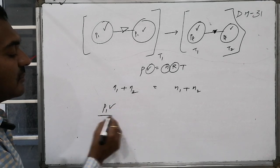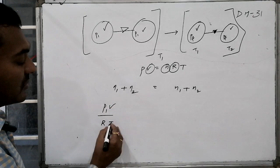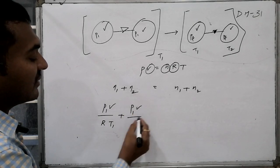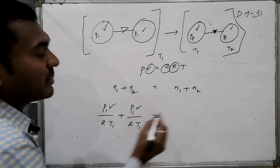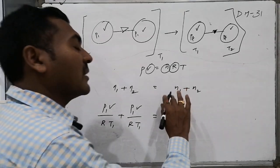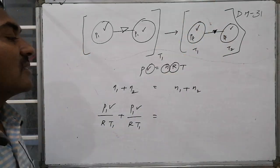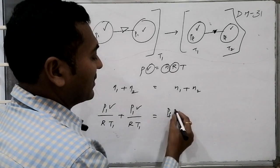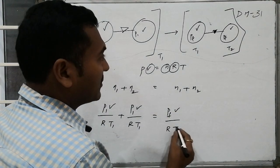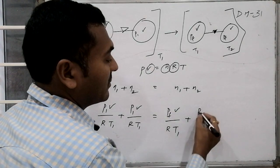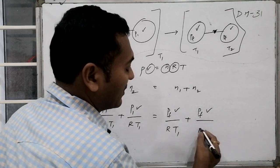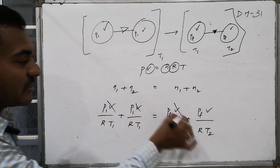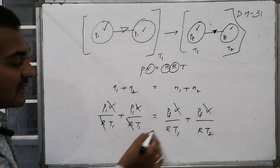For the first cylinder: P1V/(RT1), plus second case: P1V/(RT1). This equals N1 plus N2 in the final case. In the final case, N1 is PfinalV/(RT1) plus PfinalV/(RT2). The common terms are volumes on both cases and R on both cases.